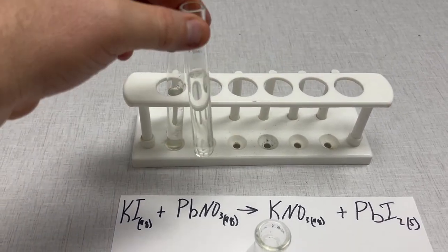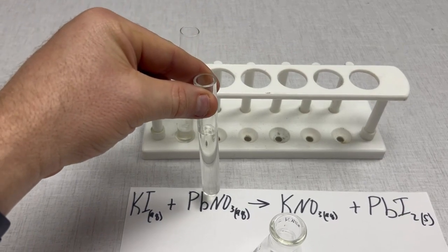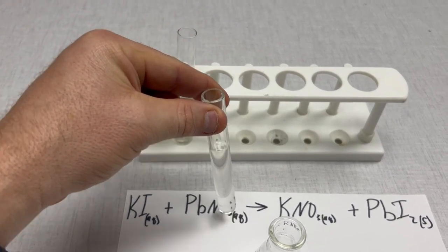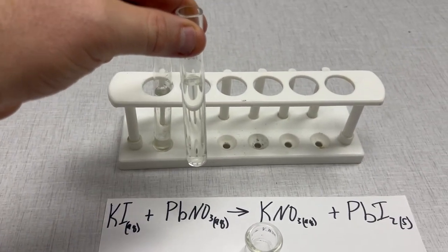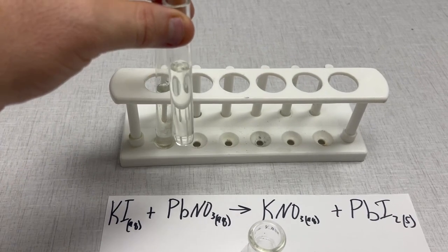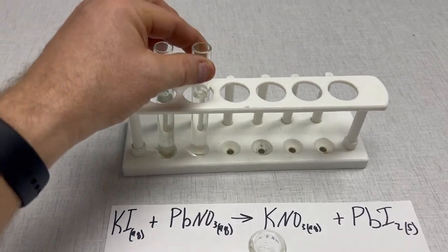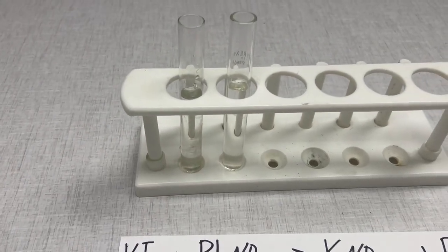Then we have lead nitrate, which is the Pb(NO3)2. Also we see the AQ, so we know that this is also dissolved into solution. So both of these start off as powders and I mix them with water and we got these two clear solutions.